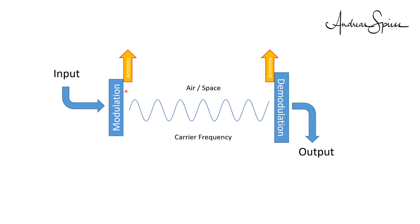The transmitter emits a specific power, and the receiver needs a minimal signal to demodulate it. The difference between the two is called link budget. With this budget, you have to pay for the losses in cables, antennas, and in the space between the antennas, including obstacles. By the way, if you do it right, antennas can have gain instead of losses.